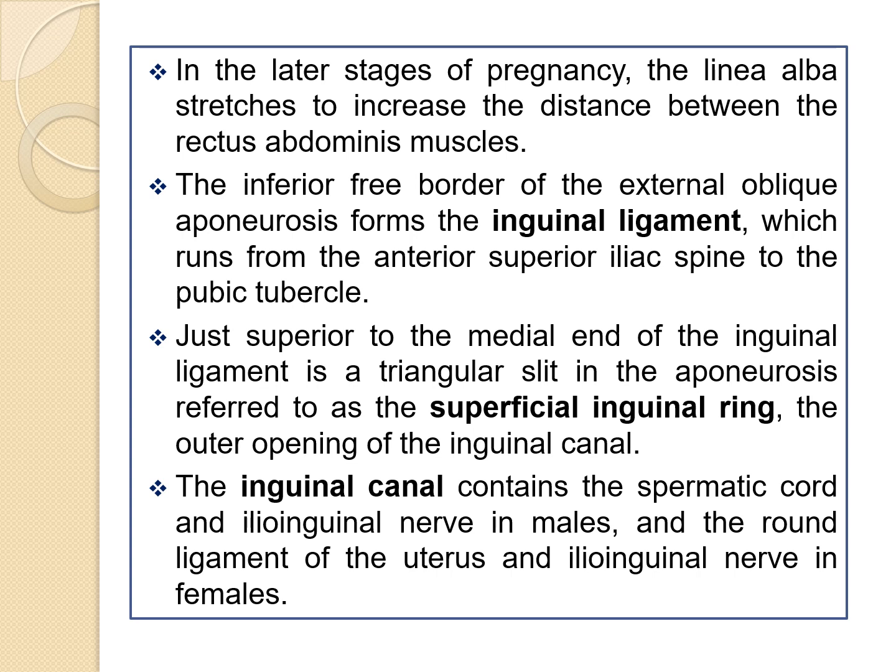In the later stages of pregnancy, the linea alba stretches to increase the distance between the rectus abdominis muscles. The inferior free border of the external oblique aponeurosis forms the inguinal ligament, which runs from the anterior superior iliac spine to the pubic tubercle. Just superior to the medial end of the inguinal ligament is a triangular slit in the aponeurosis referred to as the superficial inguinal ring, the outer opening of the inguinal canal. The inguinal canal contains the spermatic cord and ilio-inguinal nerves in males, and the round ligament of the uterus and ilio-inguinal nerve in females.